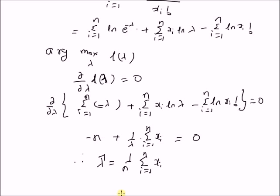Therefore, the maximum likelihood estimator of the parameter lambda for a Poisson distributed random variable x is given by the sample mean of n observations. Thanks for watching.